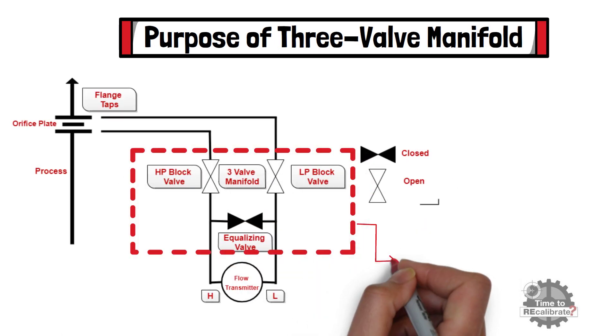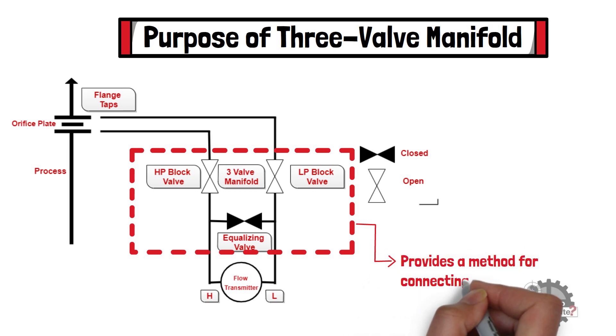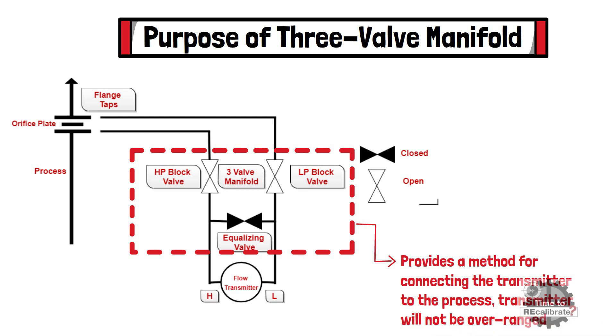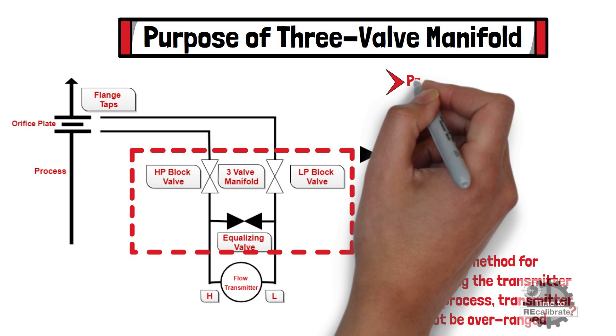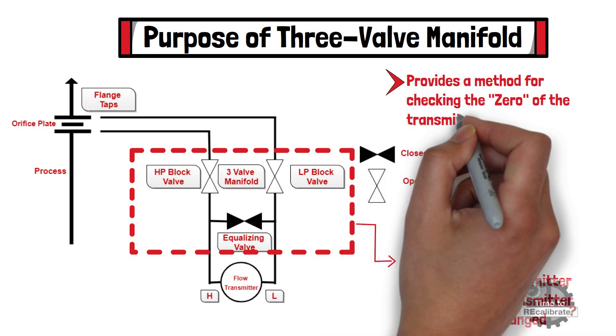The three valve manifold provides a method for connecting the transmitter to the process in such way that the transmitter will not be overranged while being removed or put into service. It also provides a method for checking the zero of the transmitter without removing it.